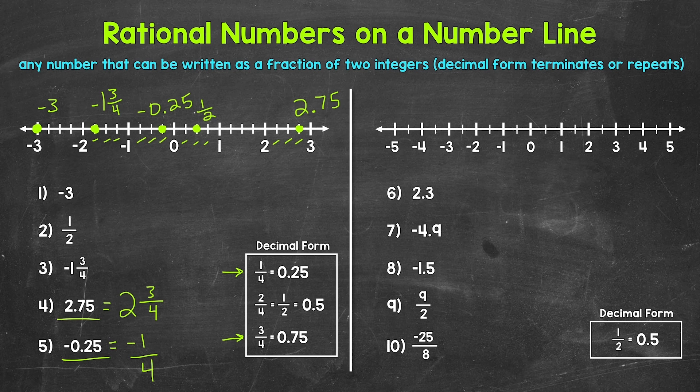Let's move on to numbers six through ten, where we'll work with a different number line — this one is split into halves. Positives: one half, one, one and a half, two, two and a half, and so on. Negatives: negative one half, negative one, negative one and a half, negative two, negative two and a half, and so on.